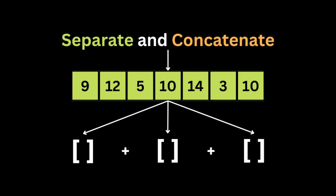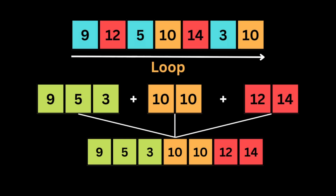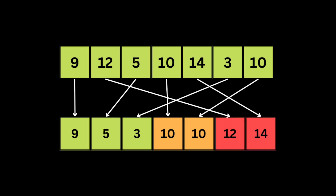To solve this problem we are going to use a technique called 'separate and concatenate'. The idea is to separate the array into three arrays and then concatenate them at the end. For example, given an input array and pivot equal to 10, we create one array for all elements less than 10, one for elements equal to 10, and one for elements greater than 10. We loop through the array and apply three conditions to place each element, then concatenate all three arrays. The result is an array partitioned into three sections while respecting the original order.